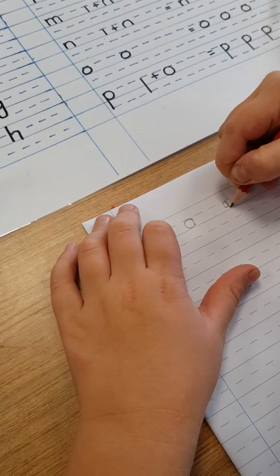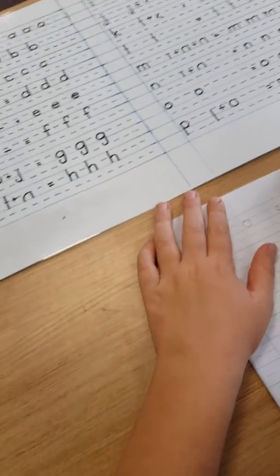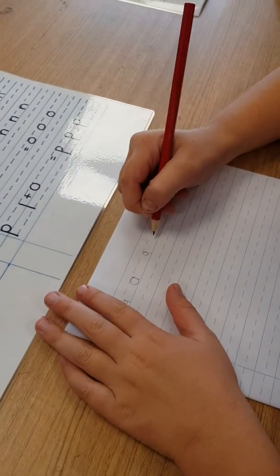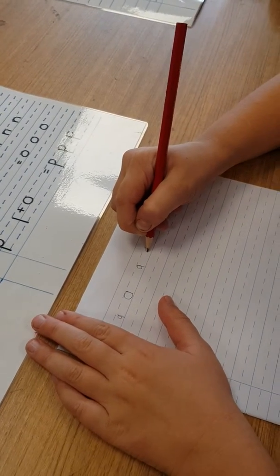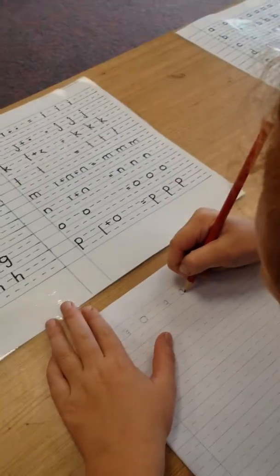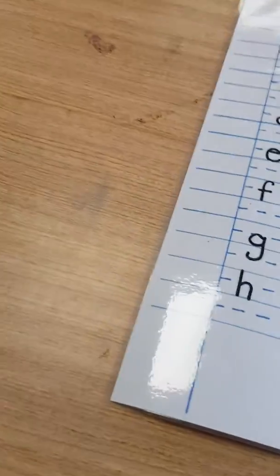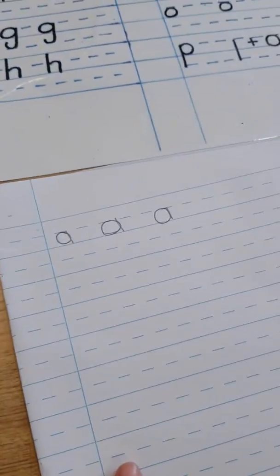Wide open mouth, short stick. And every time you write it, I want you to say the sound. So you go A, A, A. Just the sound, not the name. Can I have a look at yours? Beautiful.